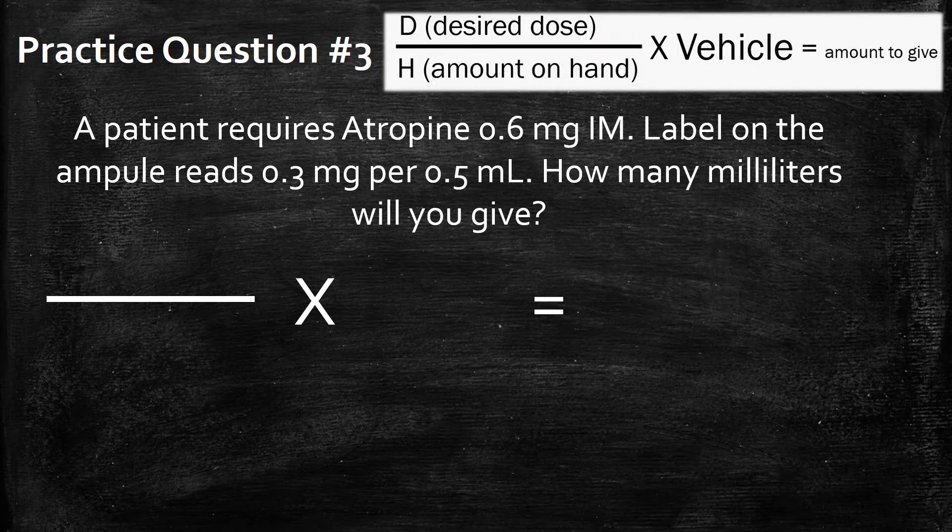So let's pull up our formula and start filling it in. Our first thing that we're looking for is the desired dose, which is what the patient needs, patient requires, or is ordered: 0.6 milligrams. We're going to put that in the top slot.